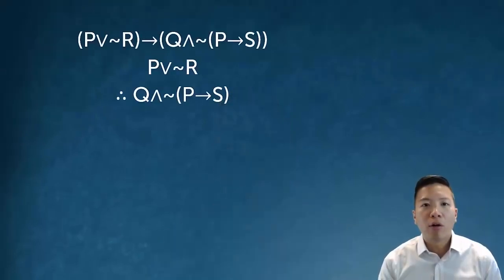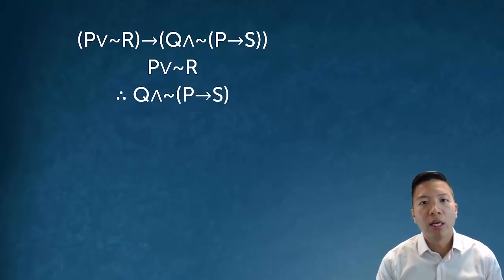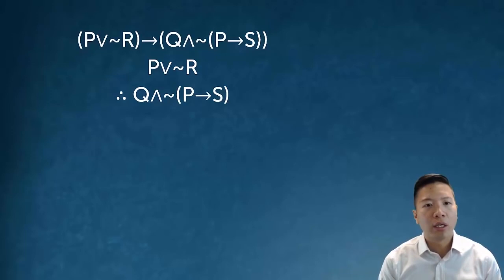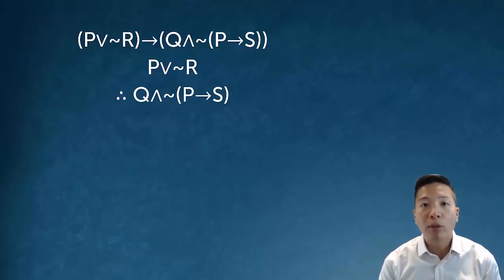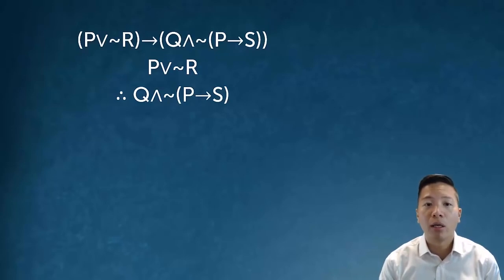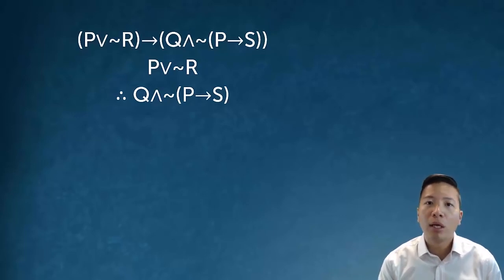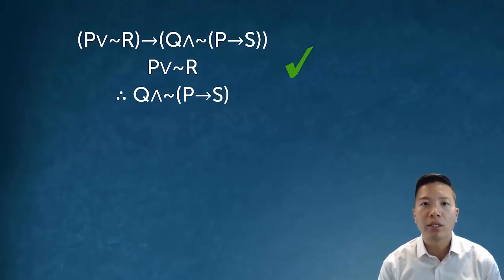Here's an example. When I look at the conditional, the antecedent is p or not r, and the consequent is q and not bracket p arrow s. The second premise is p or not r. The question is: can I properly conclude q and not bracket p arrow s? This seems like a clean instance of modus ponens — I have a conditional, I have the antecedent, so I can conclude the consequent. And that's right. This is a valid form of modus ponens.